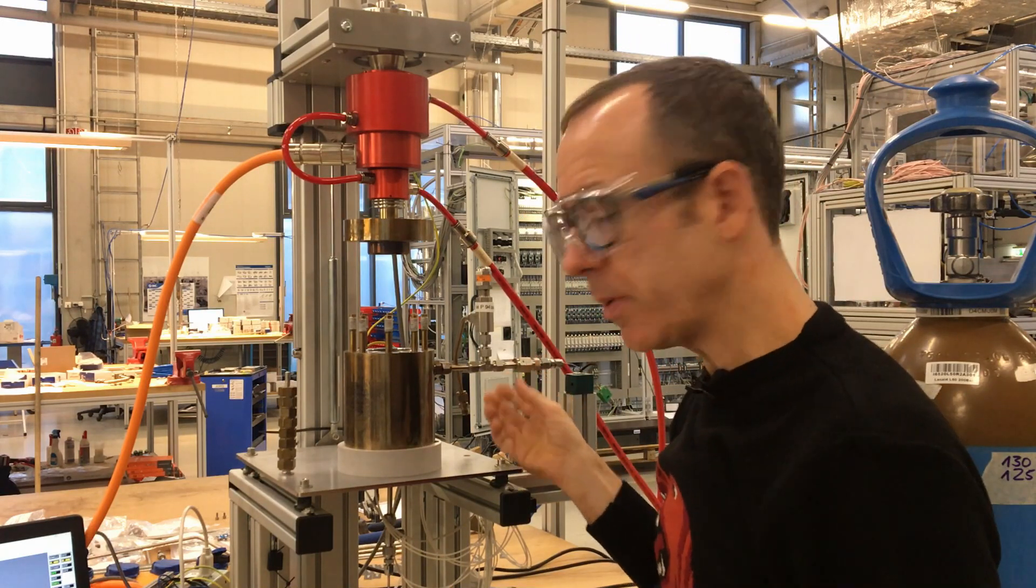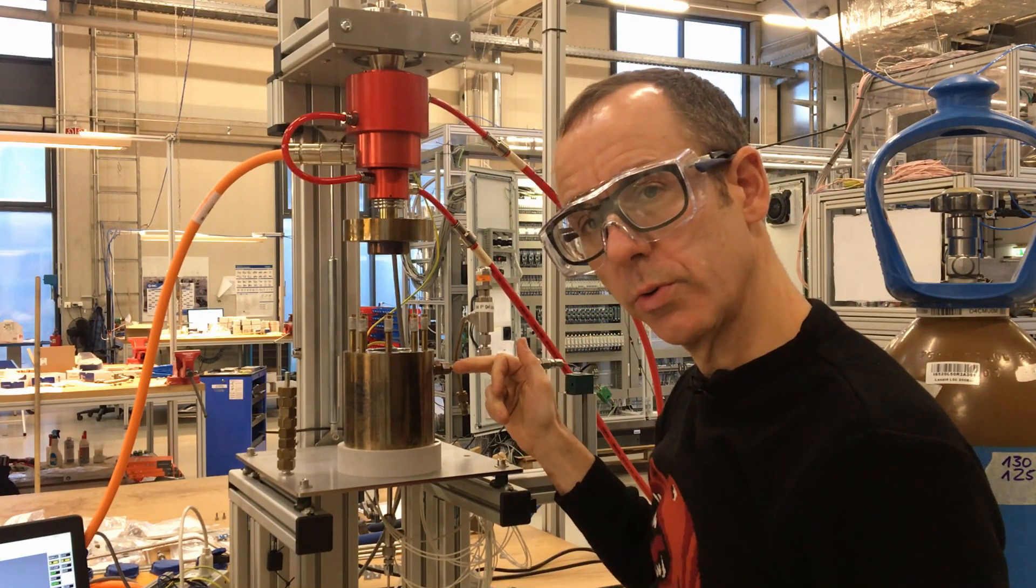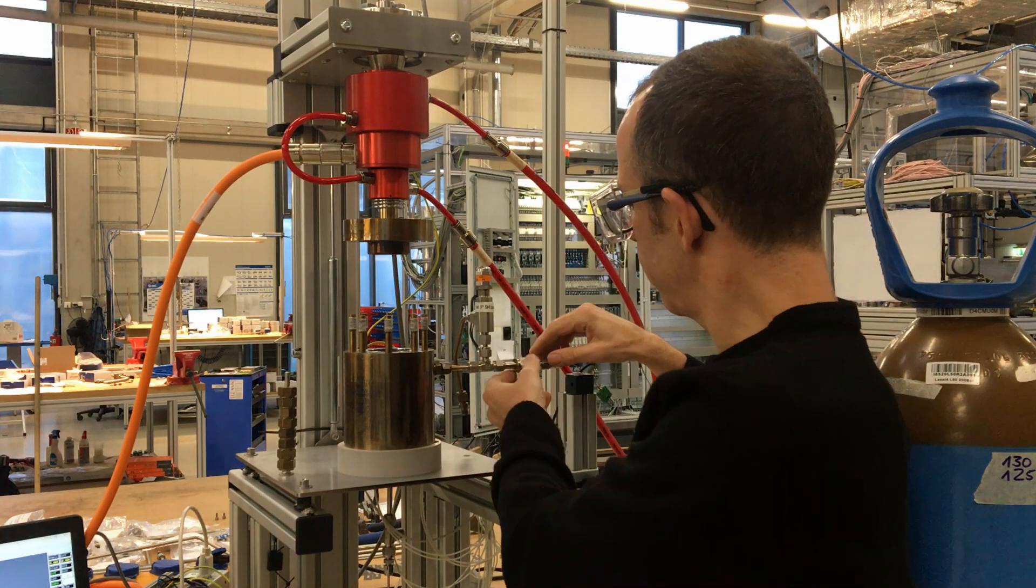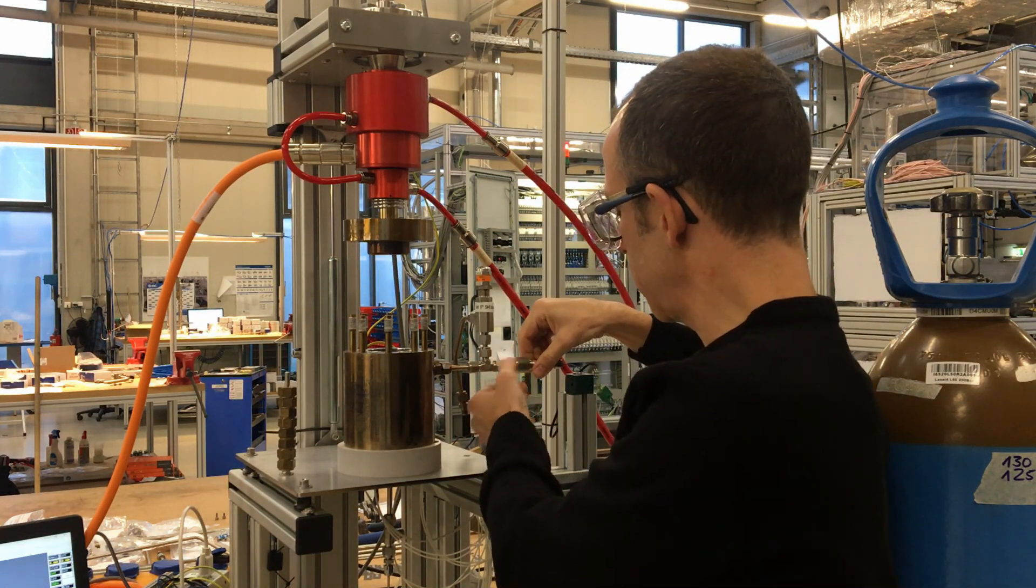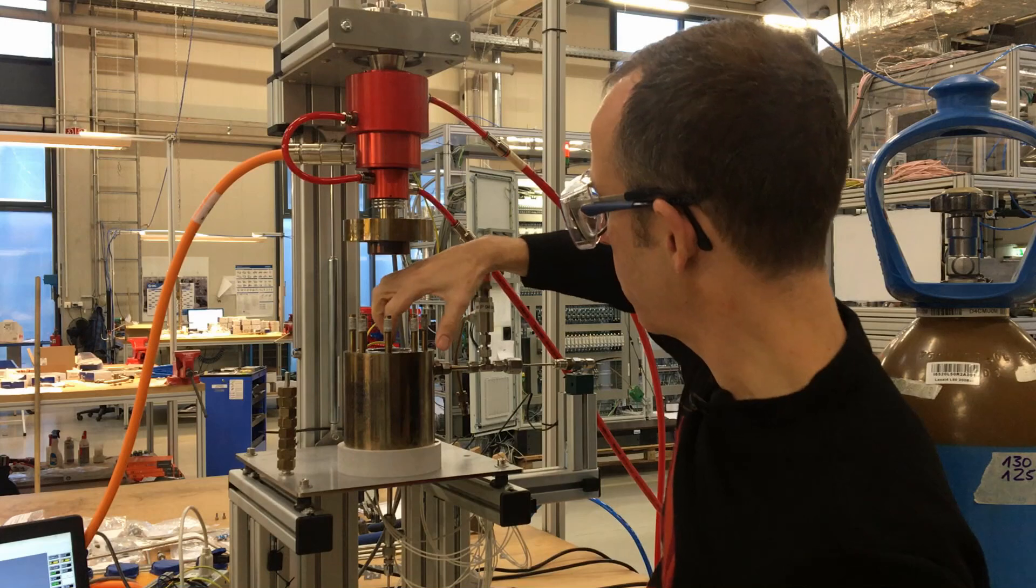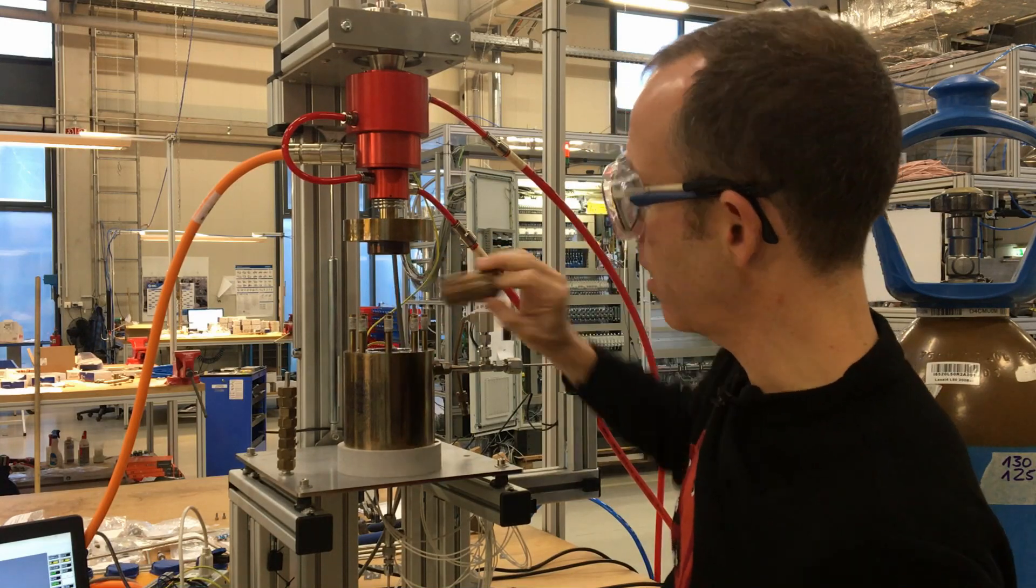We have a VCR connector on the side because one of the thermocouples protrudes into the catalyst basket itself. So you loosen the VCR coupling, pull back the thermocouple a bit, and then you can just pull the catalyst basket straight out.